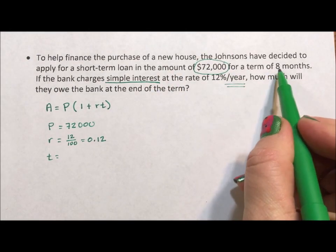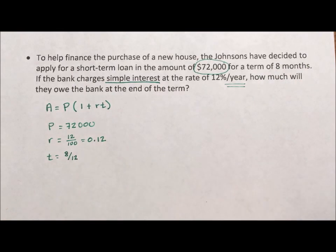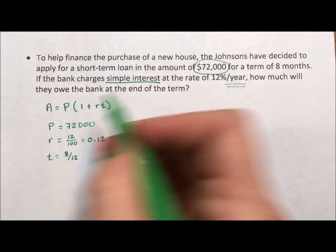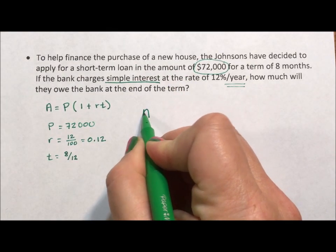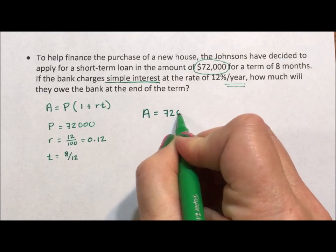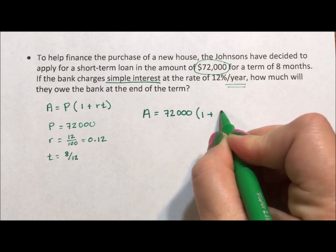So now I have everything I need. The amount that will be owed is this original $72,000 times 1 plus the rate of 0.12 times the fraction 8/12.